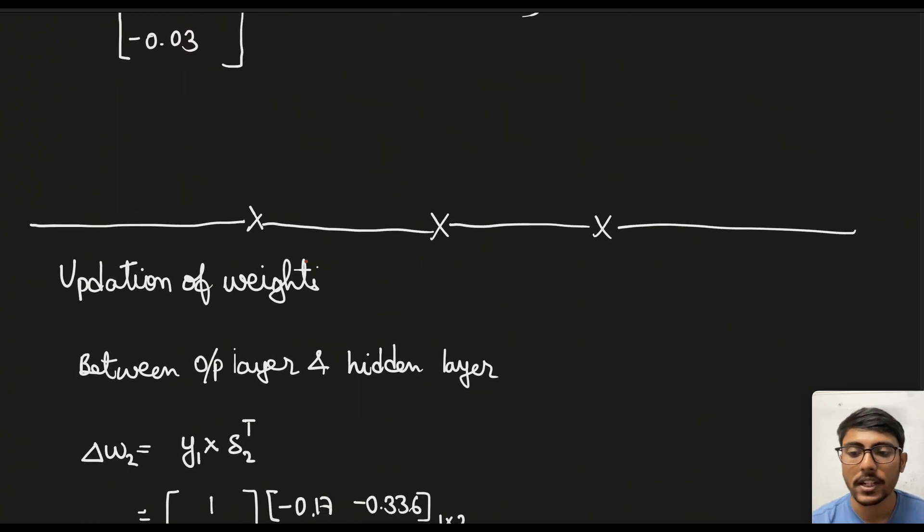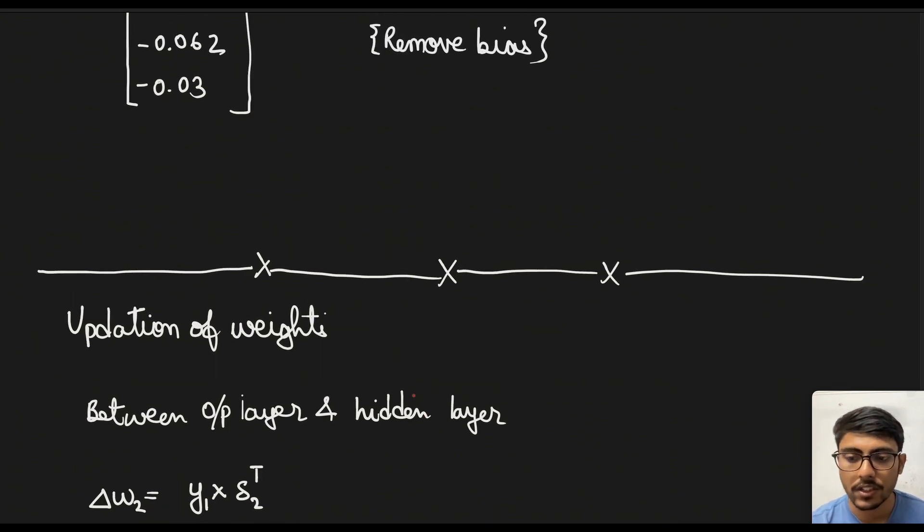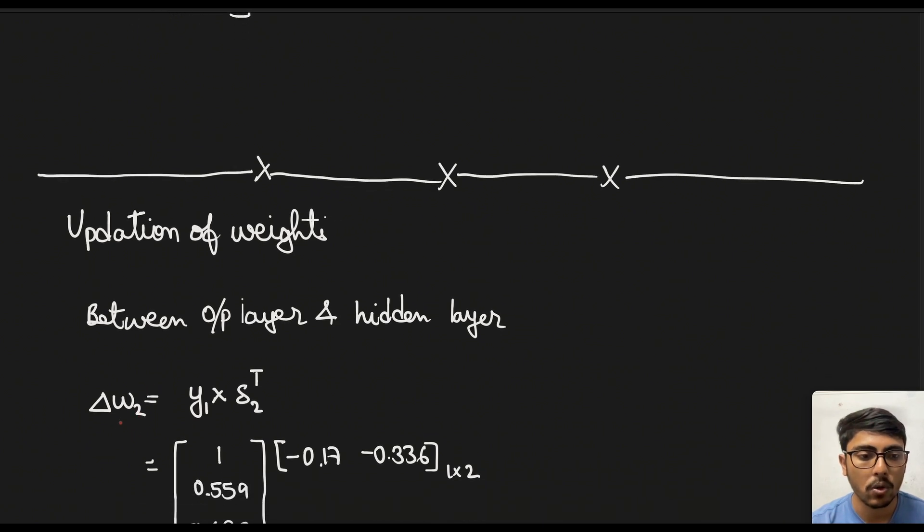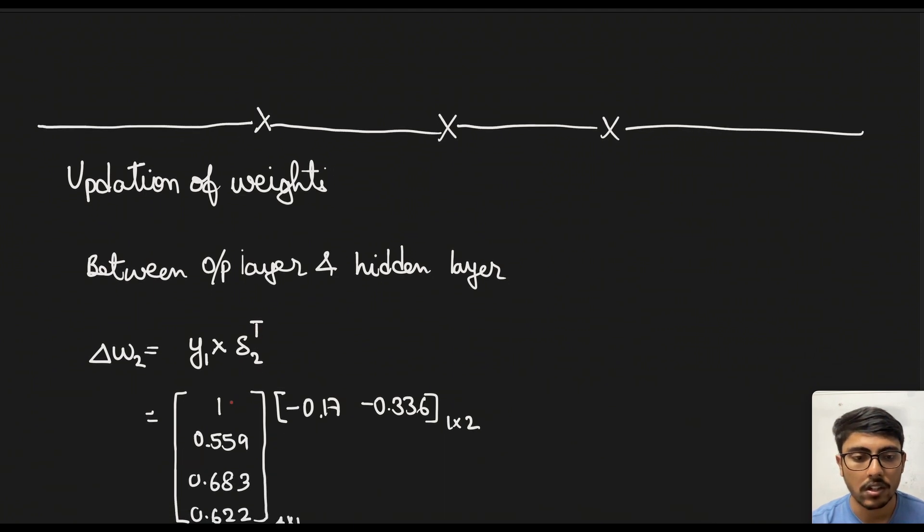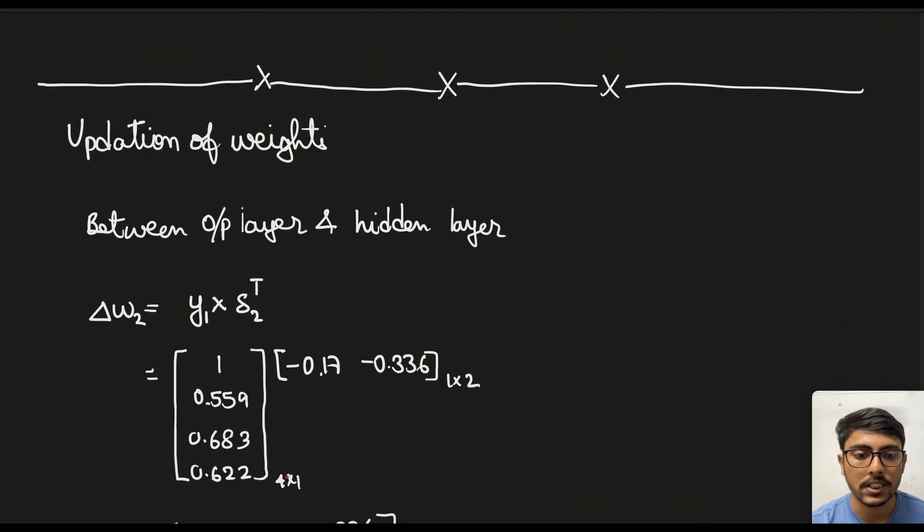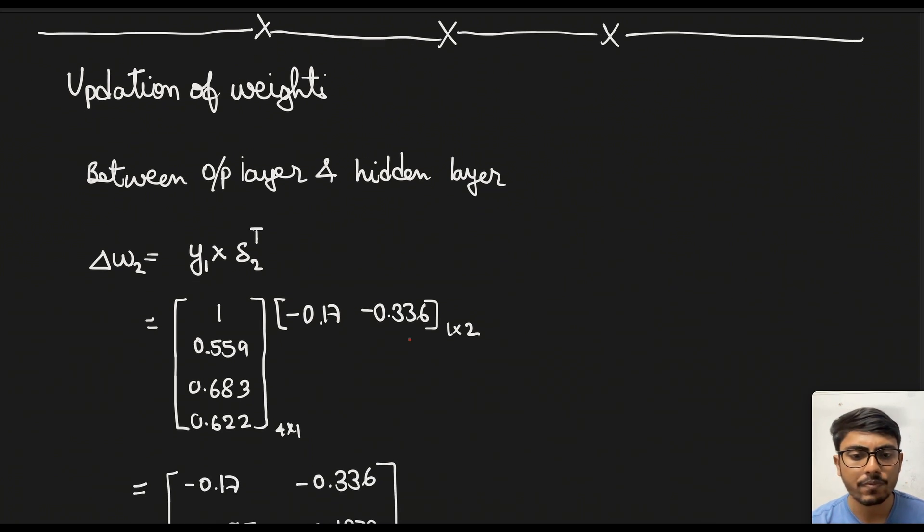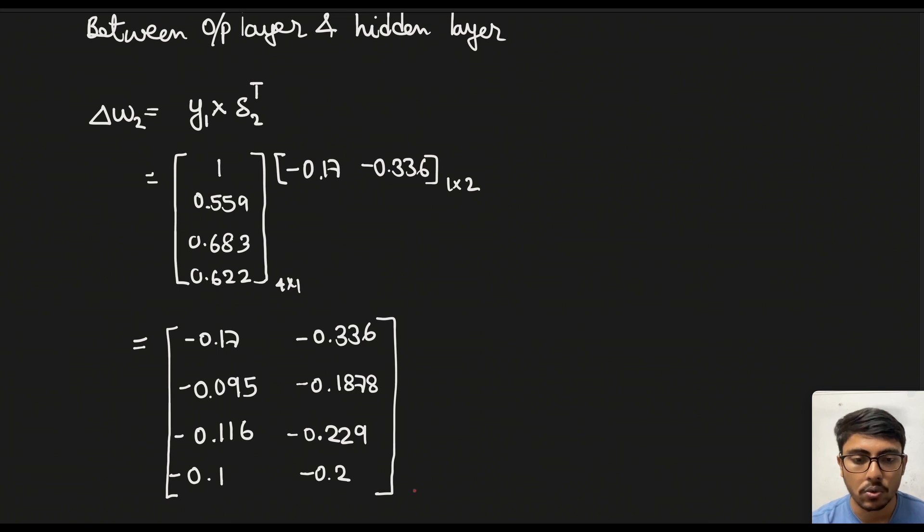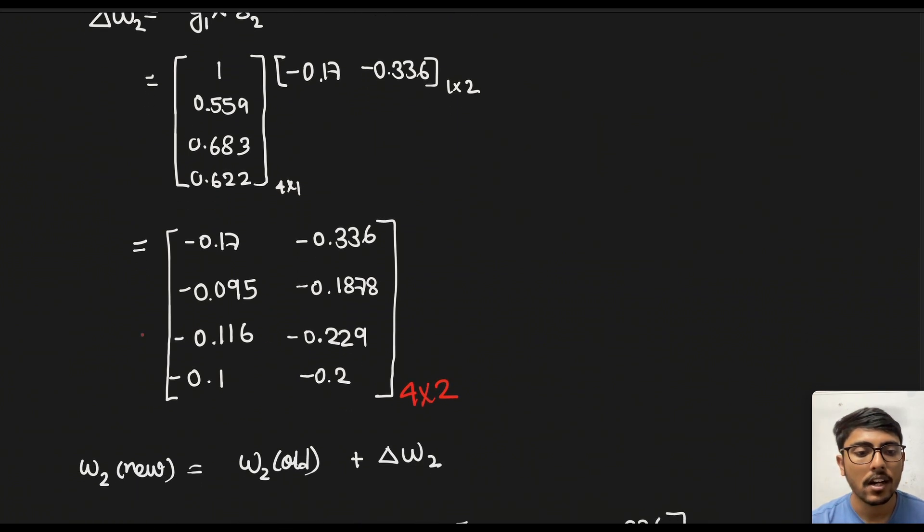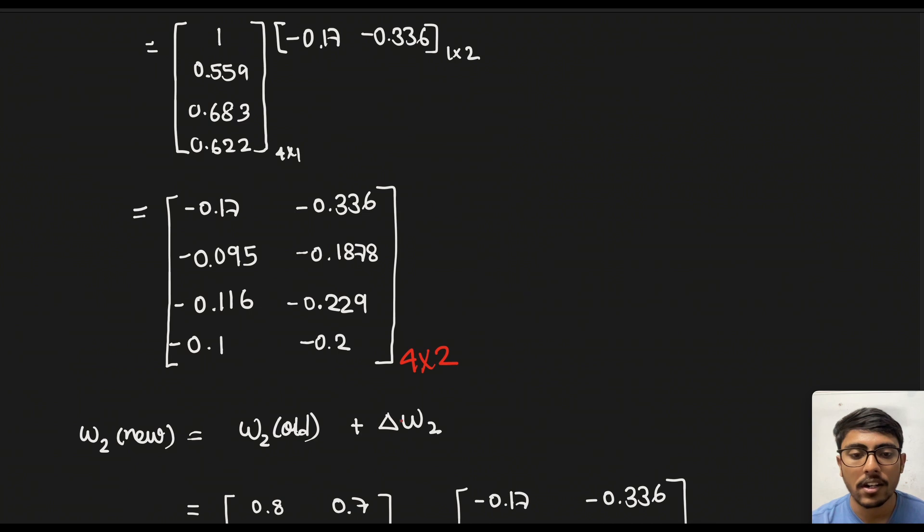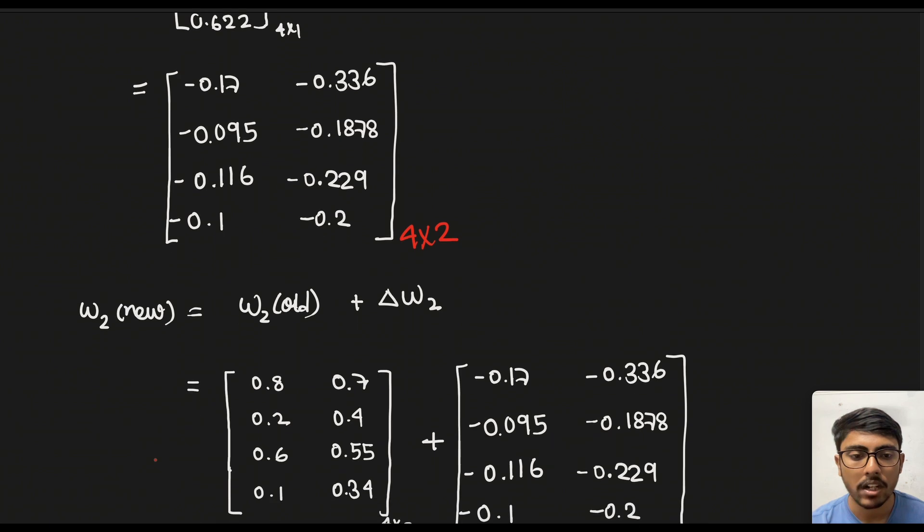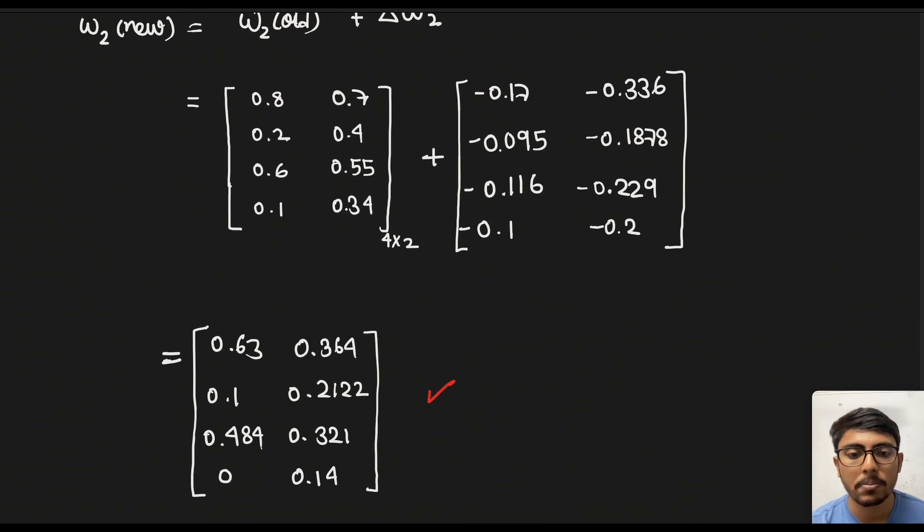Now we come to the updation of weights for which we did all this backpropagation. So between the output layer and the hidden layer first we need to calculate. So Δw2 is equal to y1 × δ transpose. So in this case y1 is basically 4 × 1 and δ2 if we take the transpose it is 1 × 2. So we multiply and get a 4 × 2 matrix. Simply now we can add the delta that is the change in weight to the old weight to get the new or updated weights. So if we do that we will get the new updated weights here.